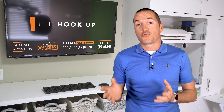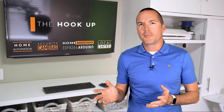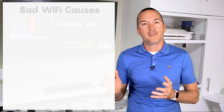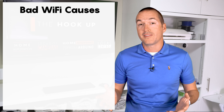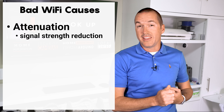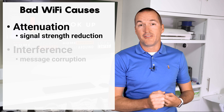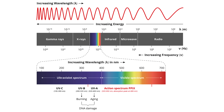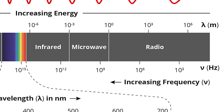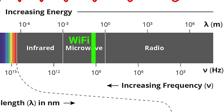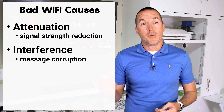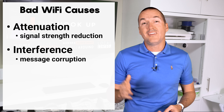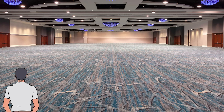In some regards wifi is extremely complicated, but the most common problems are caused by two things that are relatively simple to understand, called attenuation and interference. Wifi consists of different frequencies of radio waves, and although radio waves are different than sound waves, a simple analogy can be made between the two to teach you why your wifi sucks.